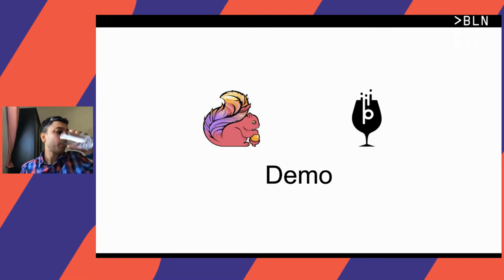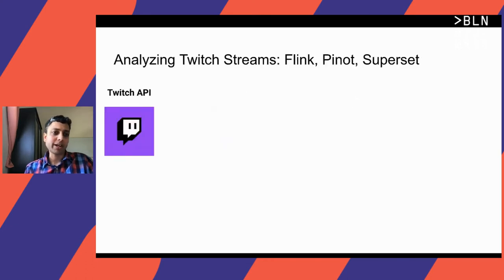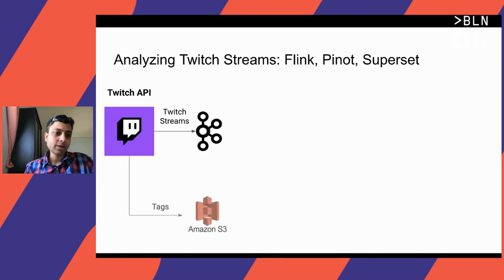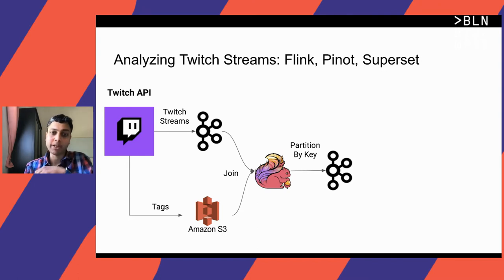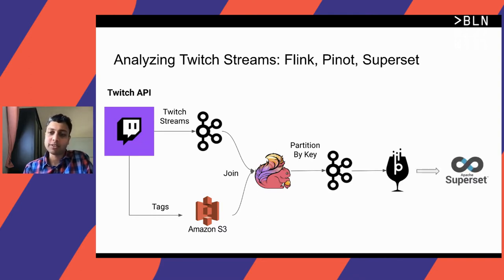Now I'll show how to solve the ingestion challenges in Pinot using Flink. We continue generating Twitch stream information from the API into Kafka. We also prefetch tags information and store it as a JSON file in S3. Flink will join this Kafka topic with the S3 file — a stream-table join — emit the enriched information back to Kafka, and repartition the data on the primary key (ID column) needed for Pinot upserts. Finally, we ingest into Pinot and visualize using Superset.